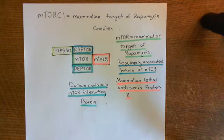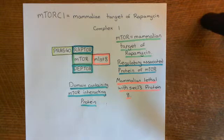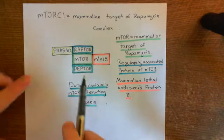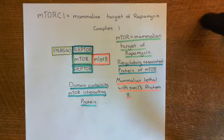We have looked at the PI3-kinase AKT-mTOR pathway, and we're just at the end of this pathway now, looking at how an activated AKT, or protein kinase B, is going to activate mTORC1, which will then cause the differentiation and proliferation.